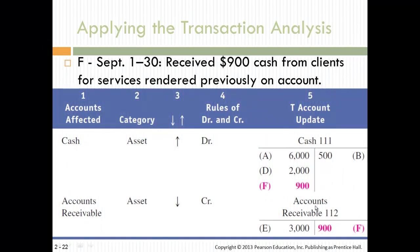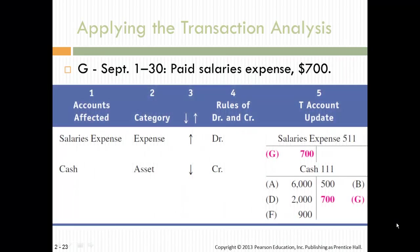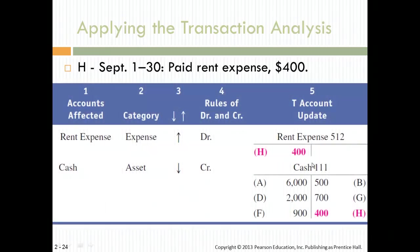$900 was received off that receivable, so accounts receivable went down and cash went up — both on the asset side of the accounting equation. Then salaries of $700 were paid: cash went down and salary expense went up. Expense is a debit account, so the expense itself increased, but the effect on equity is a decrease. Then rent of $400 was paid: cash went down and rent expense went up — again, the effect of an expense is a decrease in equity.